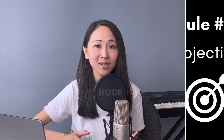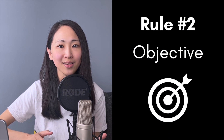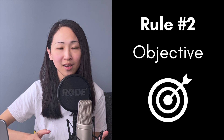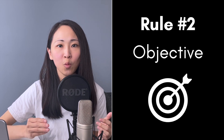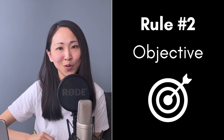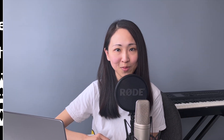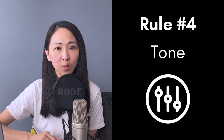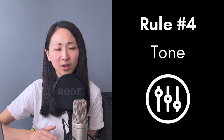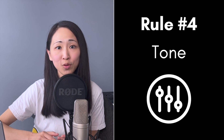Number two: objective. Include the objective for your task — encourage sign-ups, increase click rate — what angle do you want to achieve? Number three: perspective. Include a perspective for ChatGPT to adopt in order to generate more relevant responses. Number four: tone. What should be the tone of the output? Is it friendly, casual, professional, or persuasive?